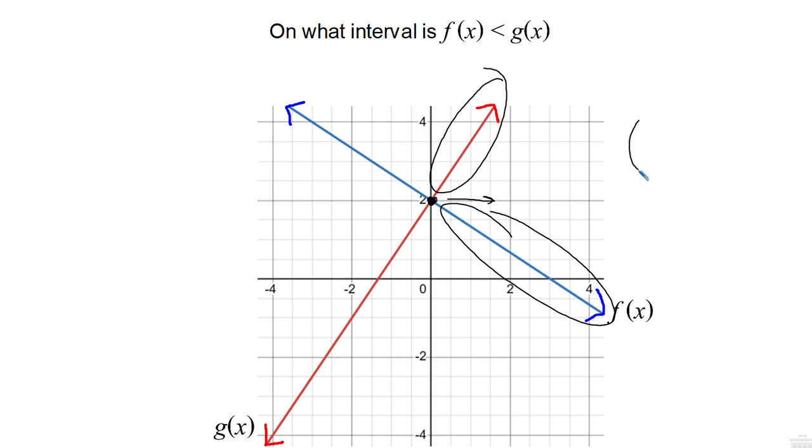So our interval will be 0 with a parenthesis to infinity. The 0 has the parenthesis because it's just a less than, not a less than or equal to sign. And numbers from 0 to infinity are the numbers that are greater than 0. So we could write this as x is greater than 0 also.